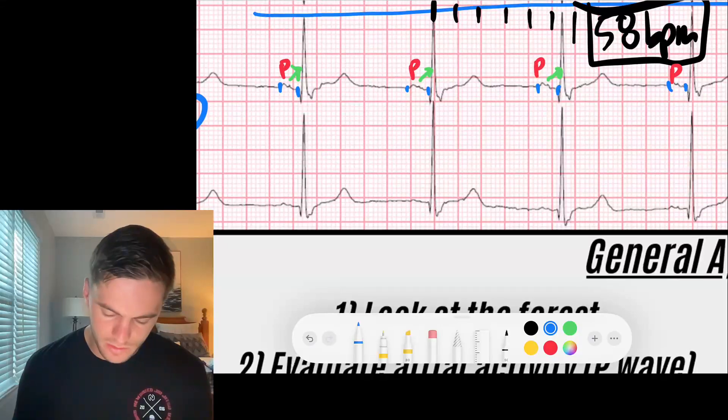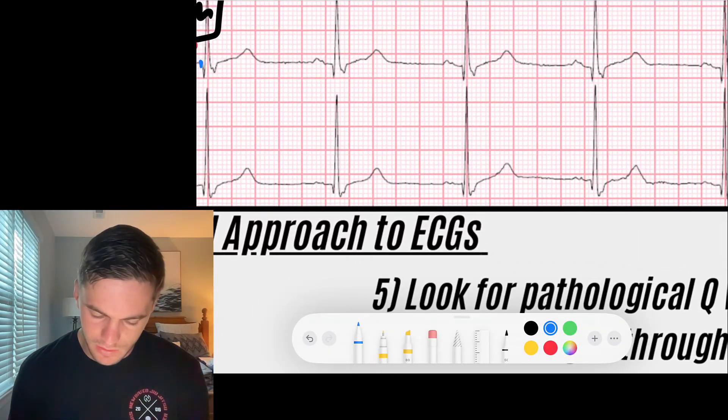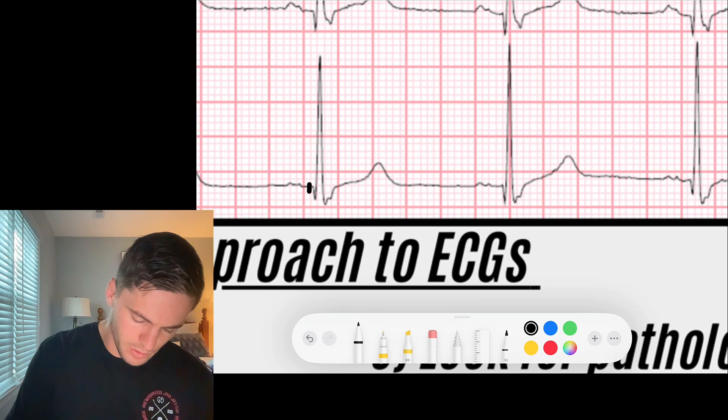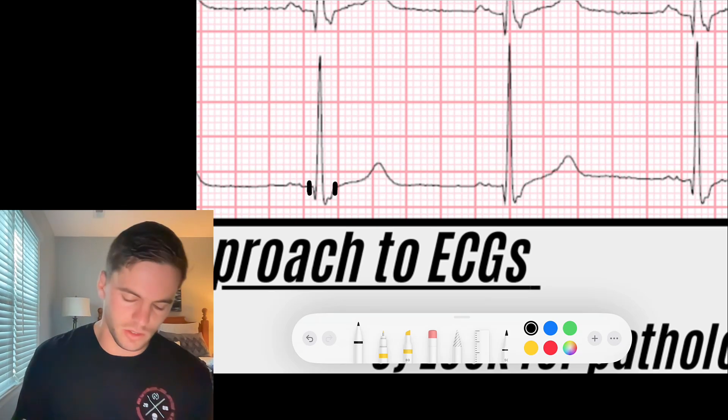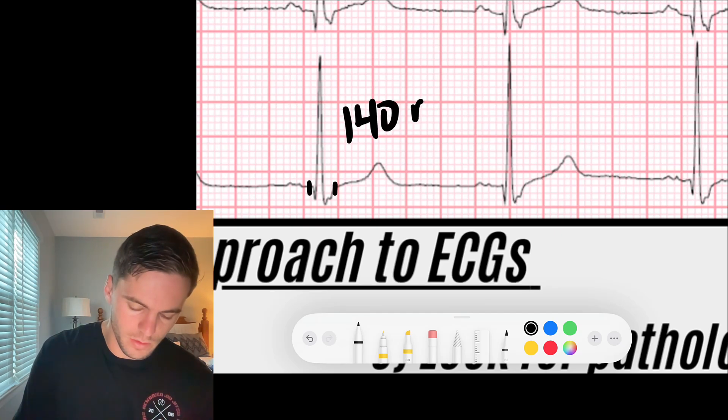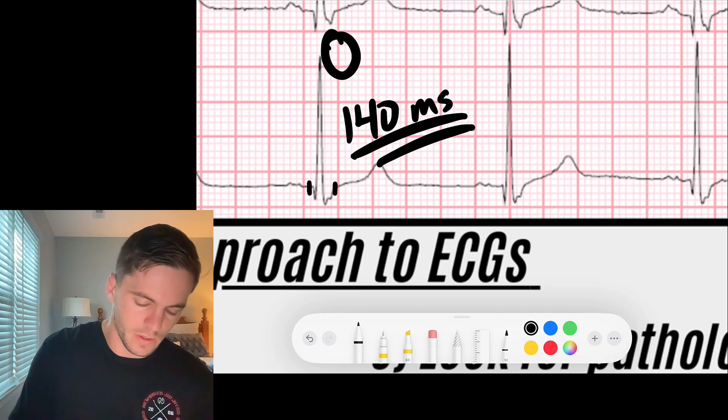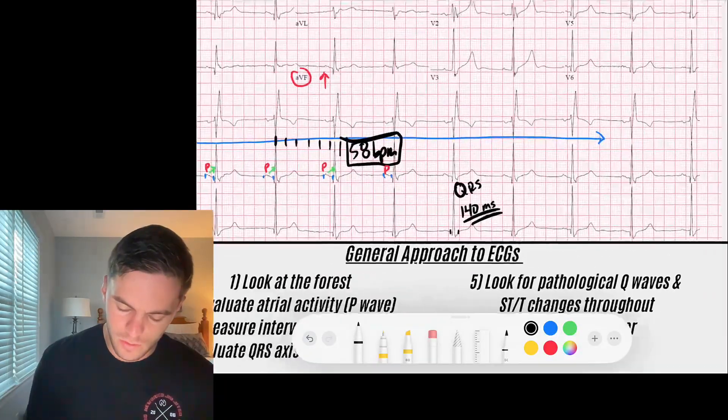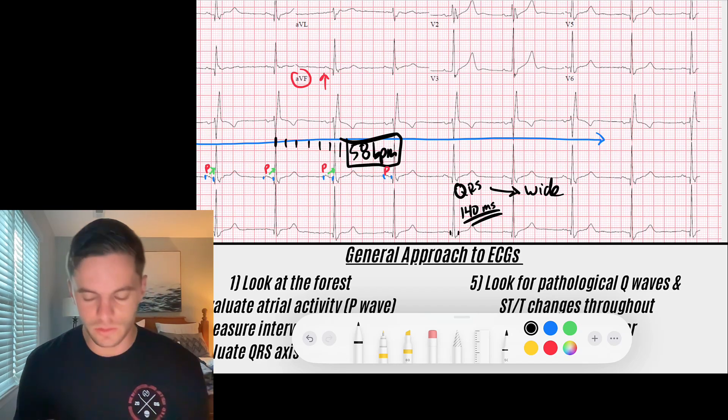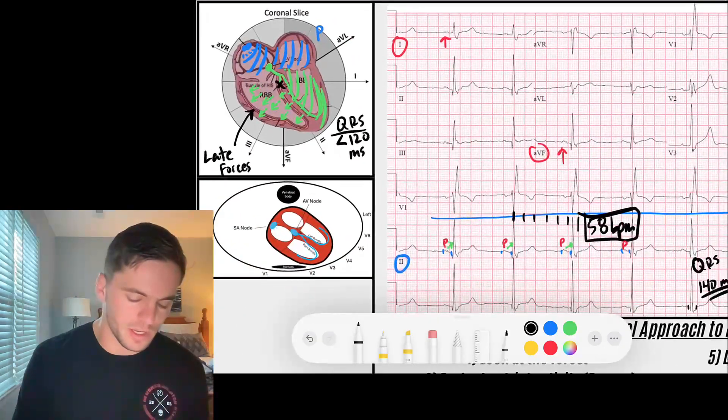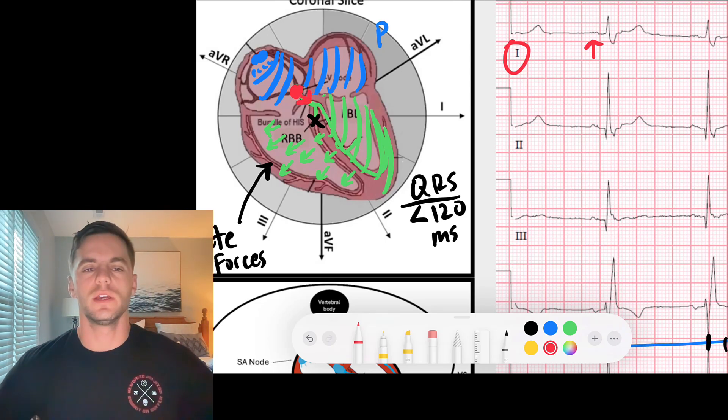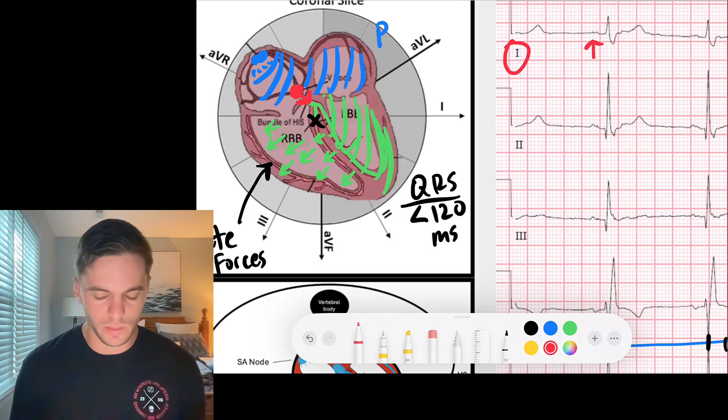So I have a wide QRS in the setting of what appears to be a rhythm that is driven by the atrio. So that tells me that a wide QRS has been generated by some force that is going from our AV node down to the ventricles. It's conducting in a way that's causing it to widen. So I look for bundle branch block patterns.